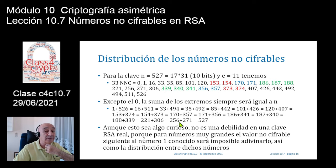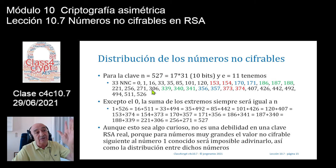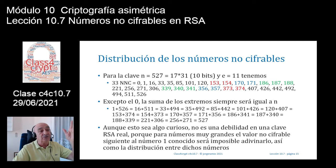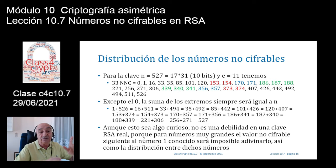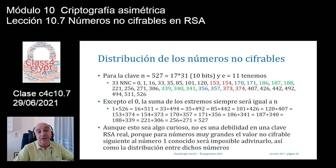Para claves reales, la distribución uniforme que tenemos para números pequeños —0, 1, 16, 33, 35, 100, 120, 170, 256, 330, 407, 526— no va a suceder en la práctica con claves reales de 2048 bits. Una vez que yo conozca el número 1, tendré muy difícil saber cuál es el próximo número no cifrable.